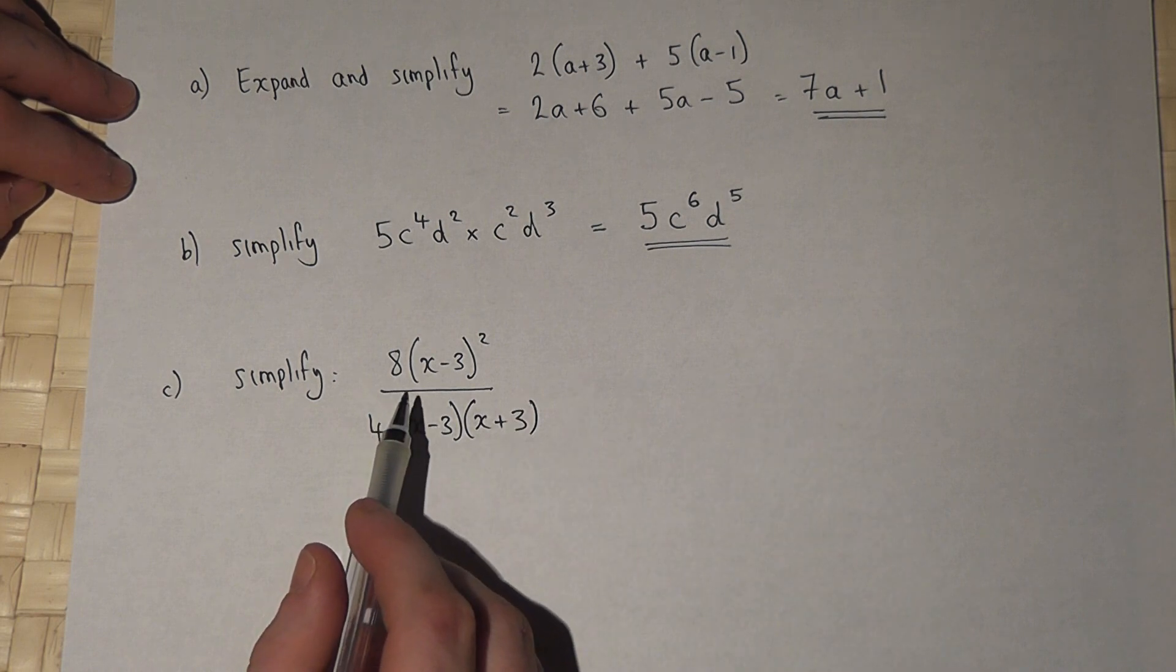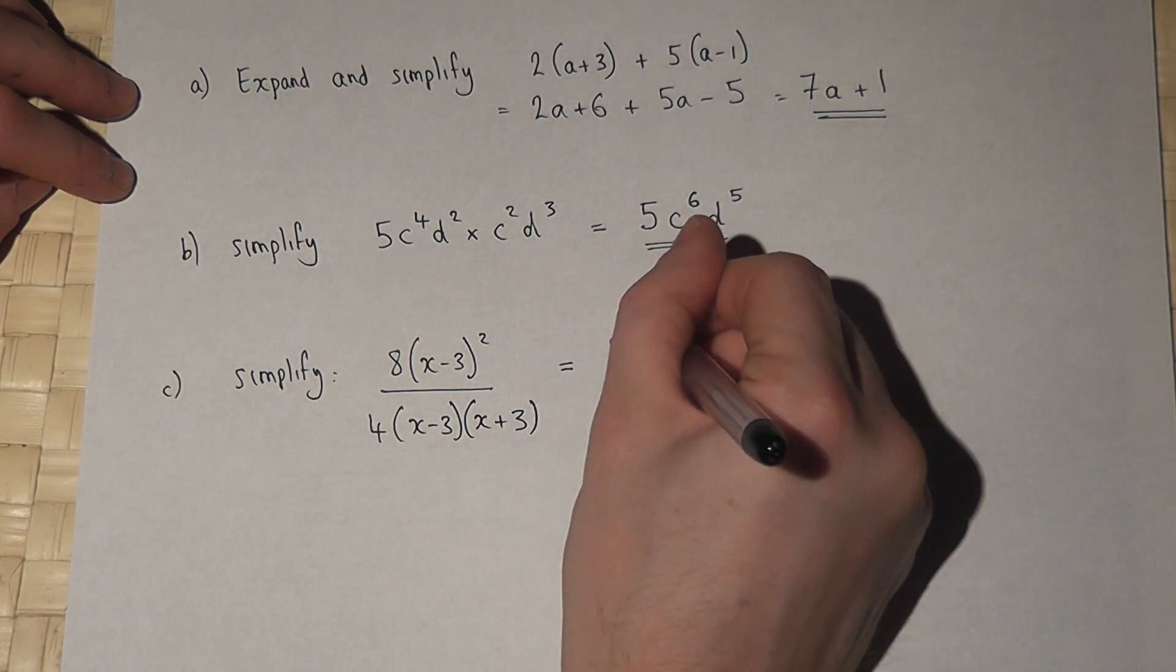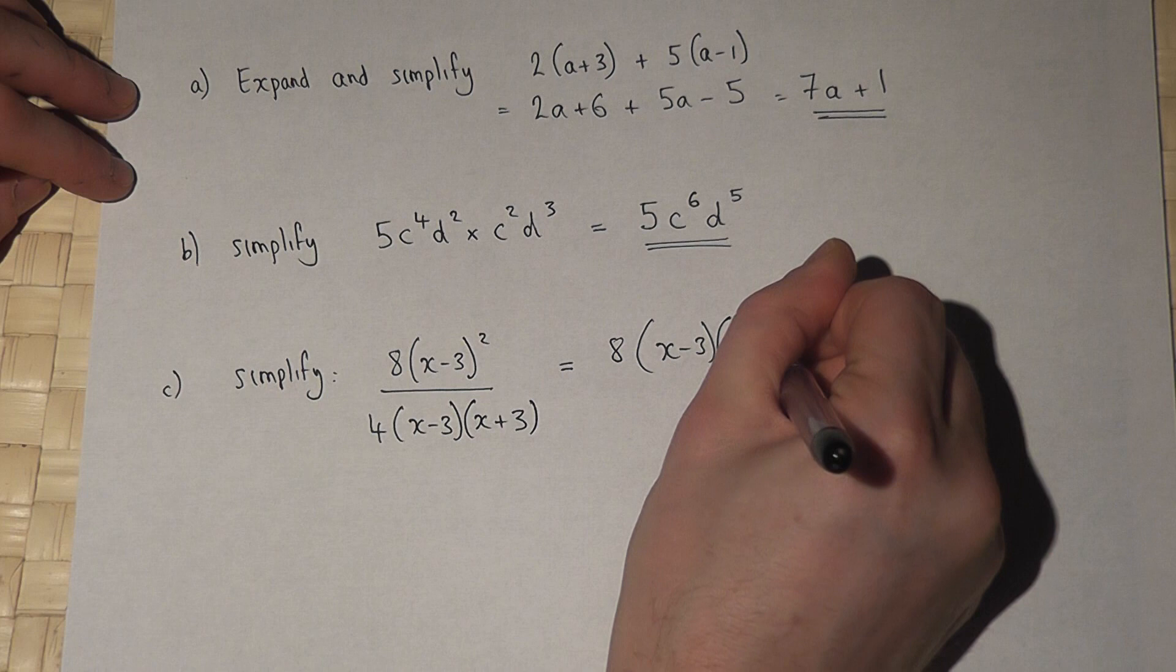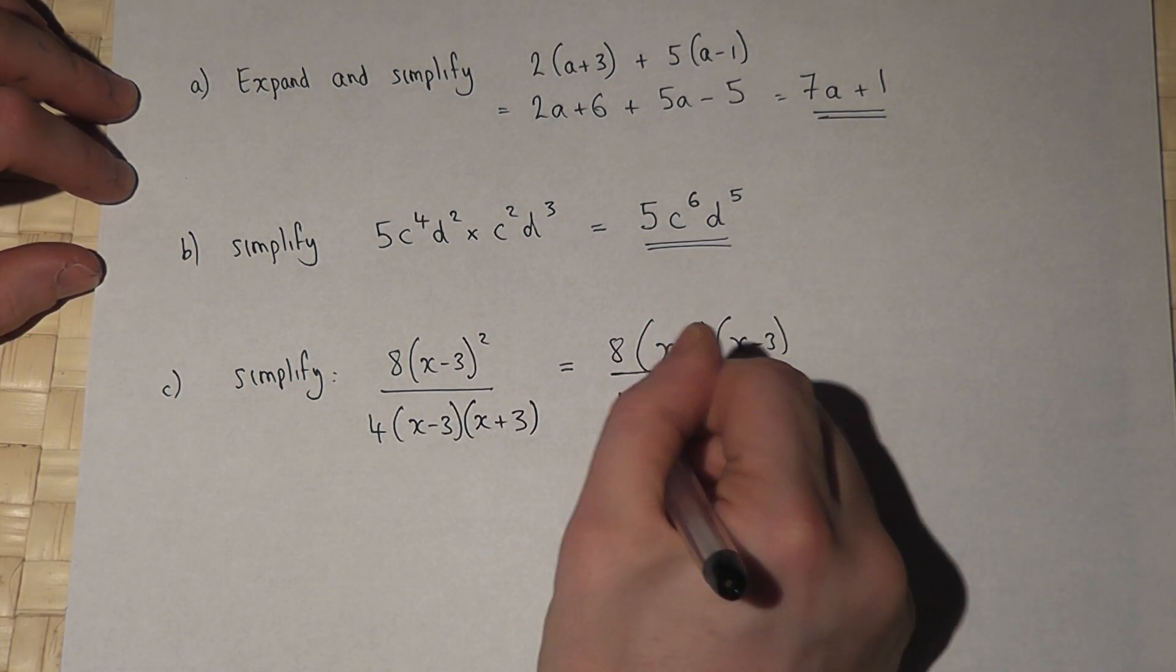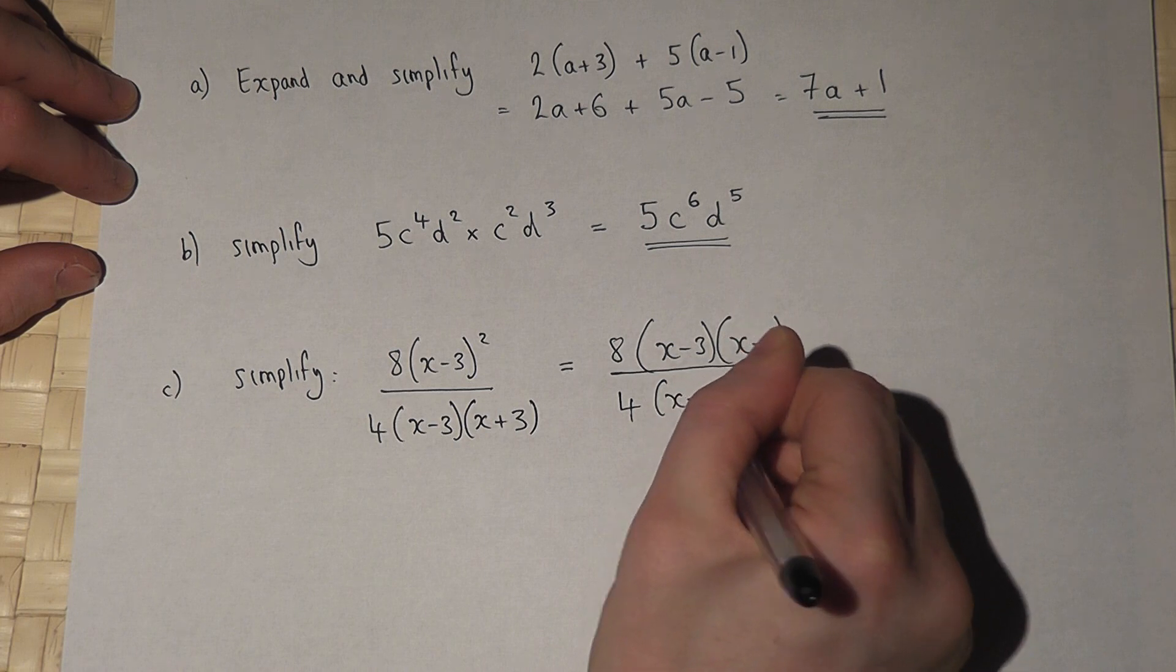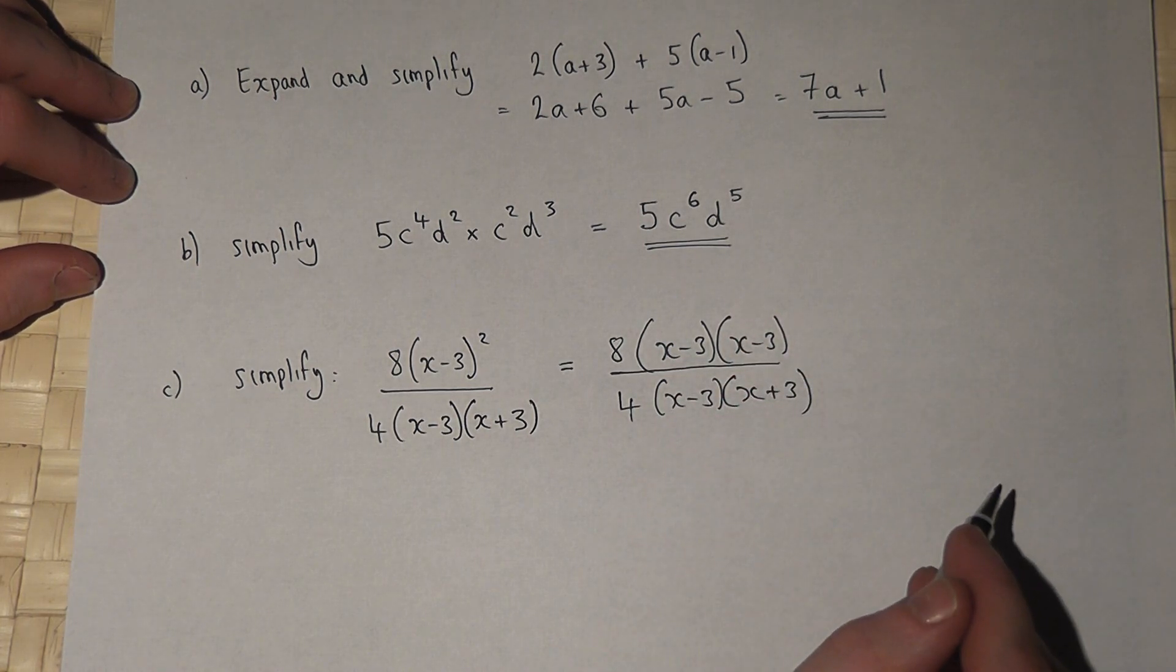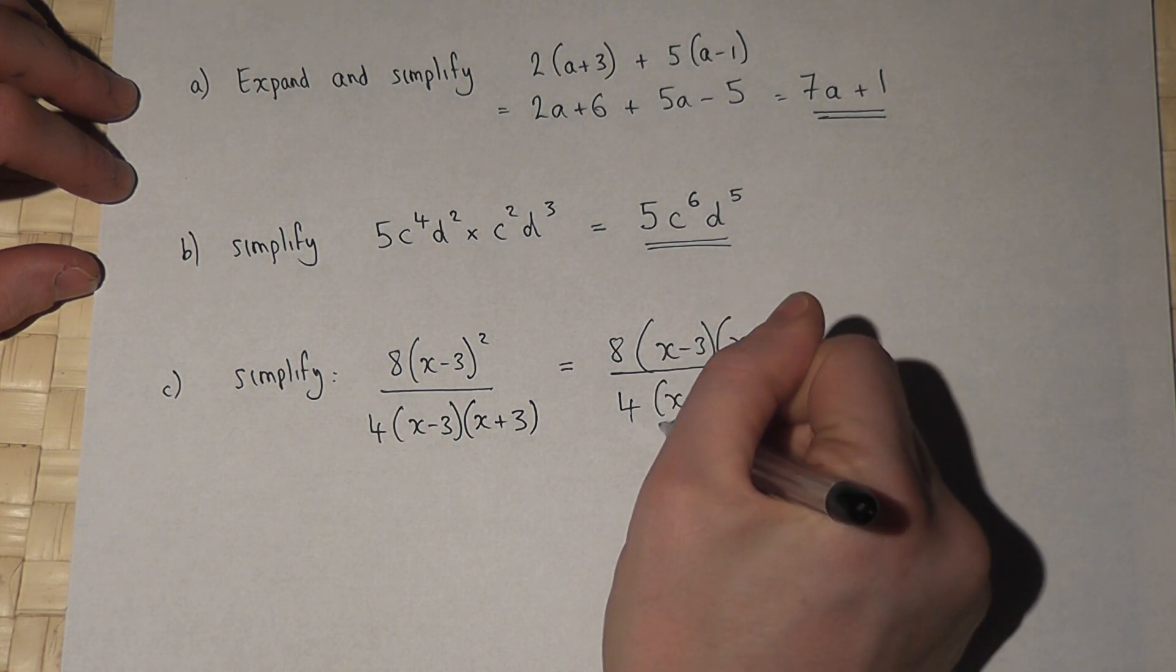Now for the third one, the best way here is to imagine this as 8(x - 3) times (x - 3), that's what the squared means, all over 4(x - 3)(x + 3). Now what we can see here is that there's an (x - 3) above and also below, so I can cancel out like so.